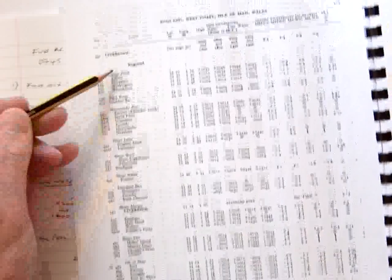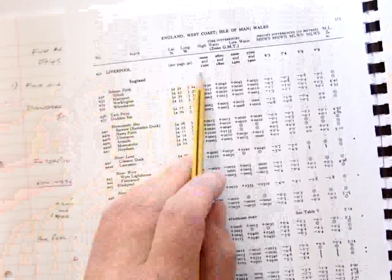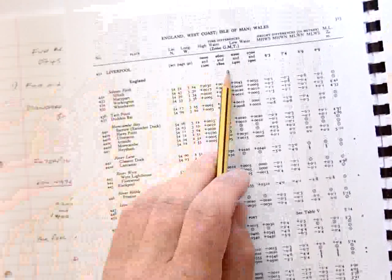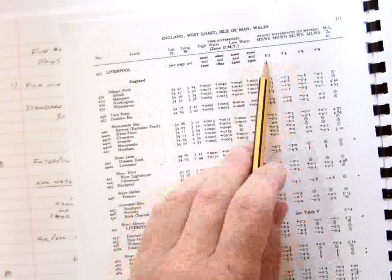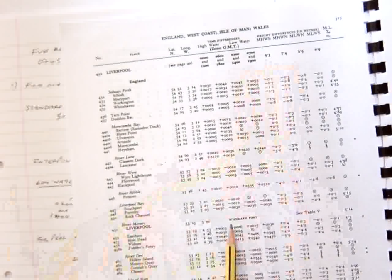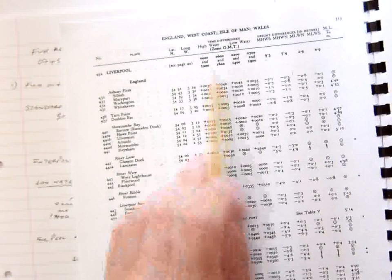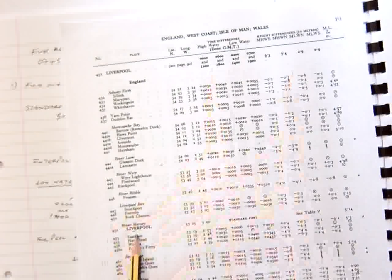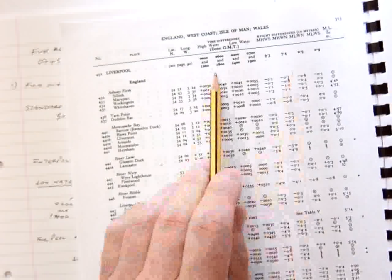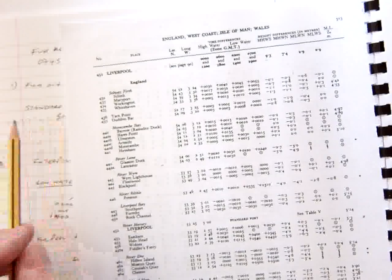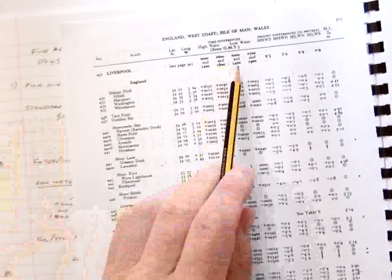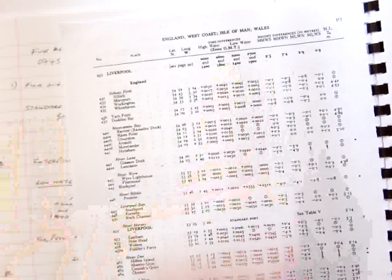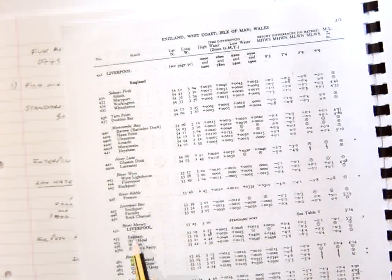If we go further up to the top, we've got Liverpool here and we've got information regarding time differences and high water springs. The information isn't here, but it's at the top. We need this information to calculate the times of high and low water at Peel and also the heights. So we now know it's Liverpool, so we go to Liverpool in the book.